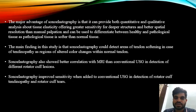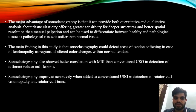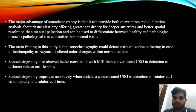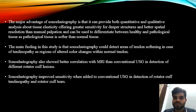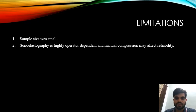The major advantage of sonoelastography is that it can provide both quantitative and qualitative analysis of tissue layers, offering greater sensitivity for deeper structures and better spatial resolution than manual palpation, and can differentiate between healthy and pathological tissues since pathological tissue is softer than normal. The main finding of this study is that sonoelastography can detect areas of tendon softening in tendinopathy as lesions of altered color within the normal tendon. Sonoelastography showed better correlation with MRI than conventional USG and improved sensitivity when added to conventional USG for detection of rotator cuff tendinopathy and tears. A limitation was the small sample size, and that sonoelastography is highly operator dependent with manual compression potentially affecting reliability.